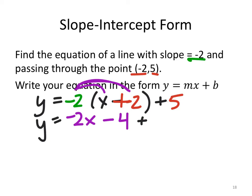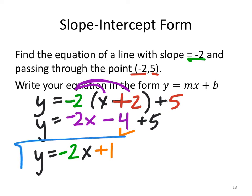So y equals negative 2x minus 4 plus 5. After simplifying this, we'll see the slope-intercept form: y equals negative 2x plus 1. There's our slope in green, and the y-intercept would be 0, 1.